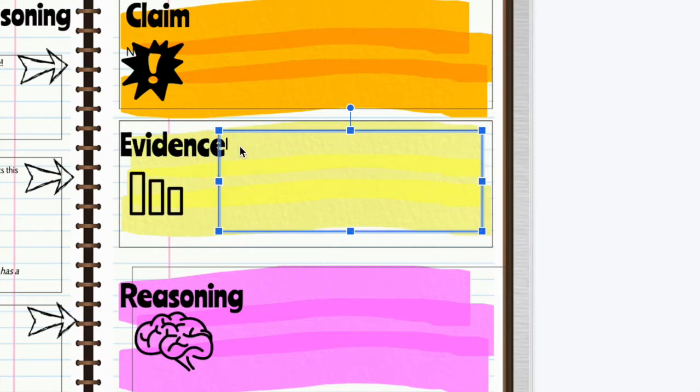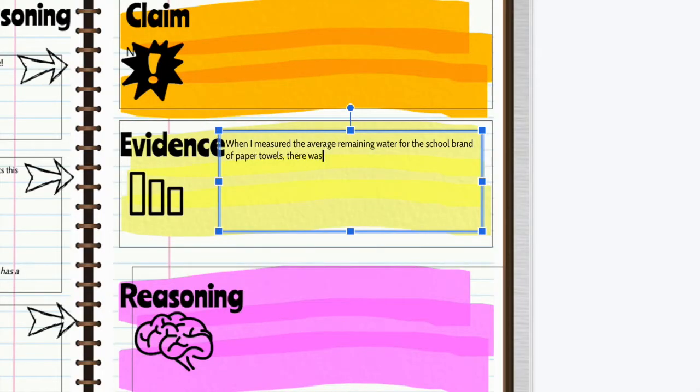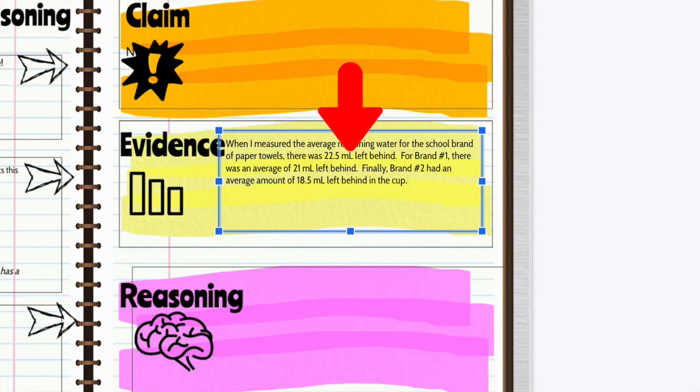Notice as I typed my evidence, I used a sentence starter from the left side of the page, and I'm typing in evidence from every single paper towel. I'm using the average remaining water for each piece of paper towel. You always have to represent everything that you measured in order to draw your conclusion and provide reasoning at the end. And if you're typing numbers, make sure you include labels on those numbers.